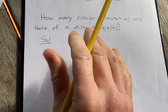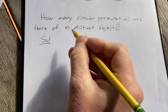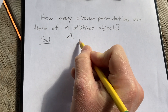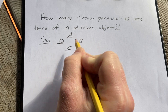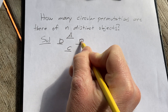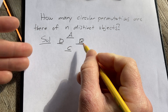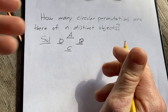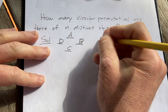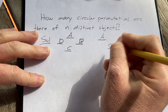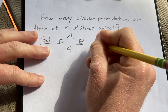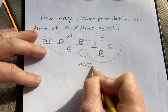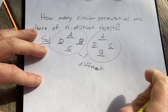First, let's talk about what a circular permutation is. Let's say we have four objects: object A, object B, object C, object D — they're all distinct. This would be a circular permutation, an arrangement in a circle of four distinct objects. A different circular permutation would be A, C, B, D. These are different circular permutations.